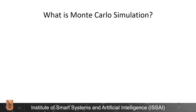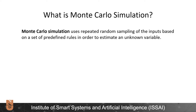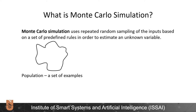Let's define this approach. Monte Carlo simulation uses repeated random sampling of the inputs based on a set of predefined rules in order to estimate an unknown variable. We have a population — a set of examples. In our maze example, it was the collection of all possible paths through the maze.